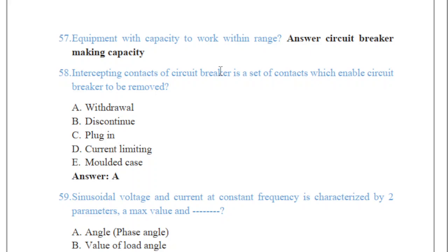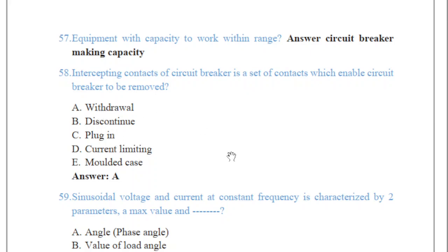Question 58 is asking about the anticipating contact of a circuit breaker, which is a set of contacts that enables the circuit breaker to be removed — and the correct answer is withdrawal. Withdrawal basically is the break course which allows for regular maintenance and provides easily visible information of circuit isolation. Having a removable part, the act of inserting and withdrawing the breaker could result in the possibility of causing arc flash incidents.